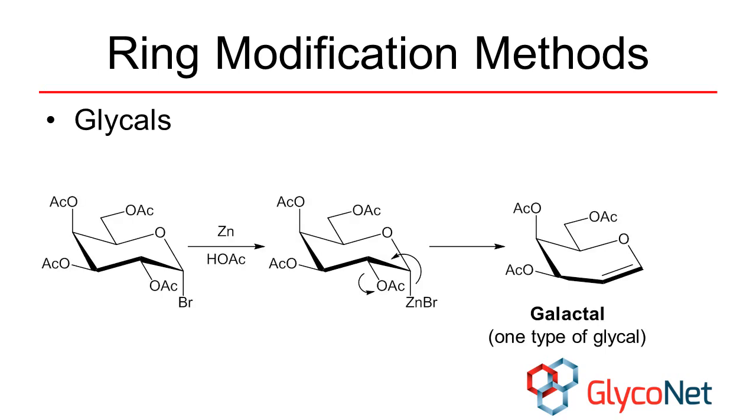Glycals are extremely useful intermediates in carbohydrate synthesis. These sugars feature a double bond between carbon-1 and carbon-2, and are traditionally made by reacting glycosyl bromides with zinc in acetic acid.